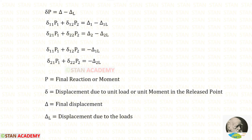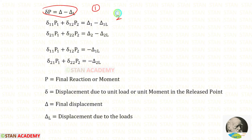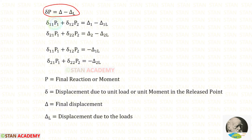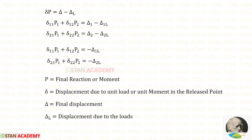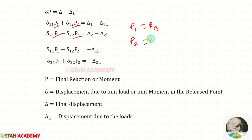Now let us see the formula to find the answers. Since there are two coordinates in this problem, we use the two-coordinate formula and make two equations. In the first coordinate we have RB, so P1 will be RB. In the second coordinate we have MB, so P2 will be MB.